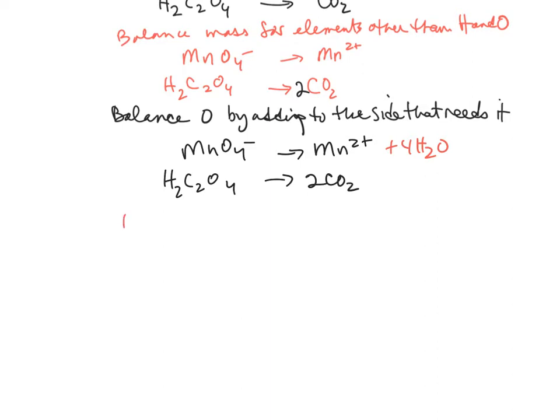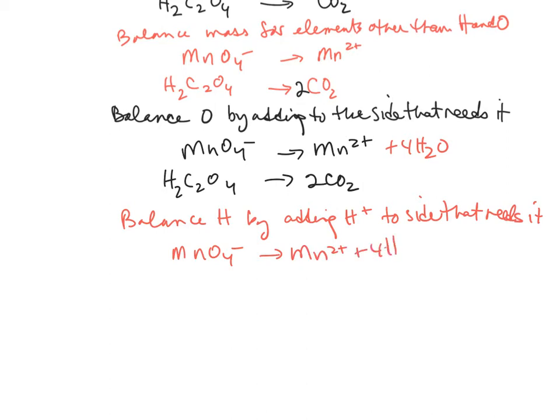So the next step then will be to balance hydrogen by adding H-plus to the side that needs it. And now we're looking at the hydrogen, so the first half reaction has eight hydrogens on the right hand side, we're going to add H plus to the left hand side, and then the second half reaction has two hydrogens on the left, so we're going to add two H plus on the right hand side.